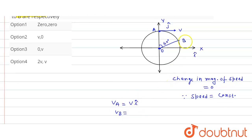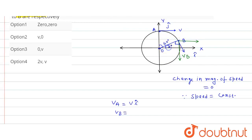For v_B, here this is the direction of v_B. v_B has two components — one horizontal and one vertical. The angle between the radius and the x-axis is 90 degrees. Since the angle at center is 60 degrees, this angle works out to 30 degrees, and when we extend the line, this angle is 30 degrees, making this angle 60 degrees.